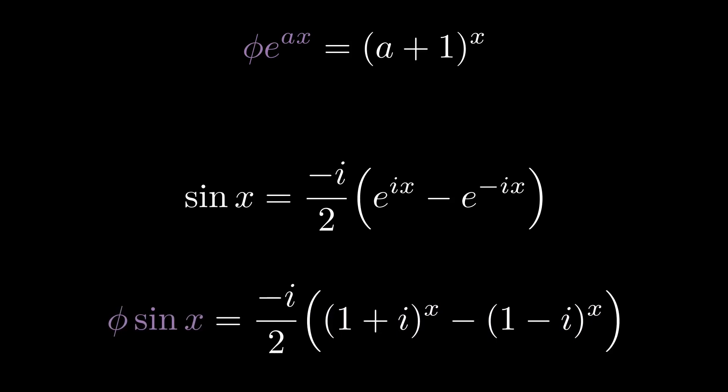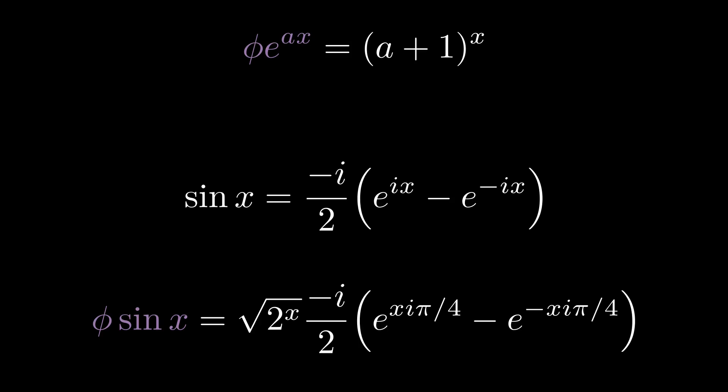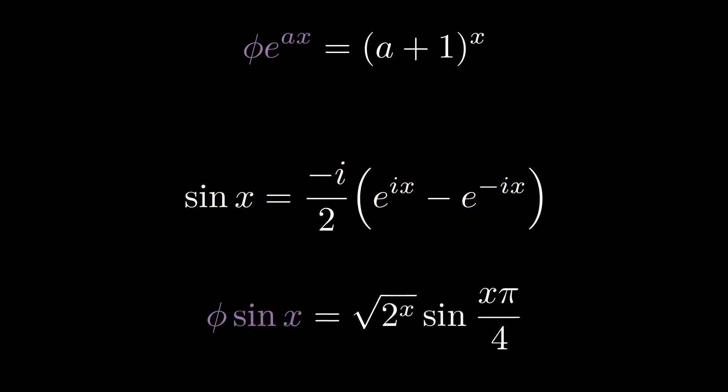Use Euler's identity to convert these complex numbers from Cartesian to polar form. Take the root 2 to the x out as a common factor, and finally, observe the complex form of sine once more to get that this equals sine x pi over 4.